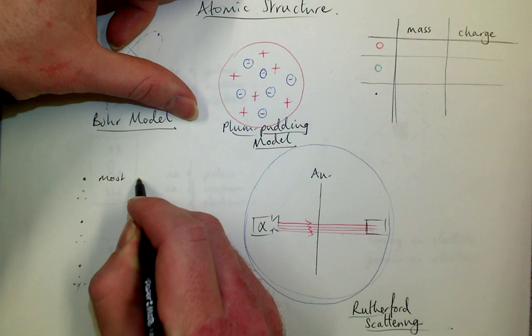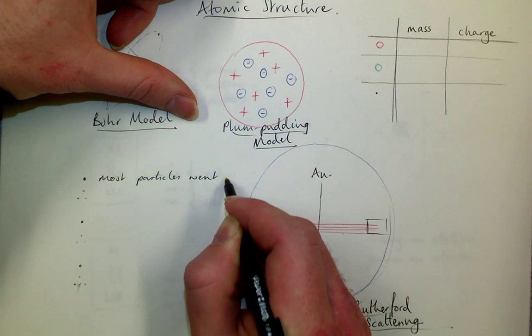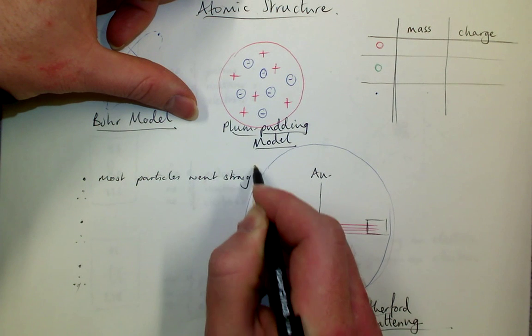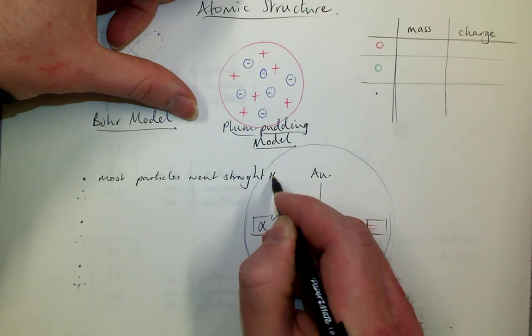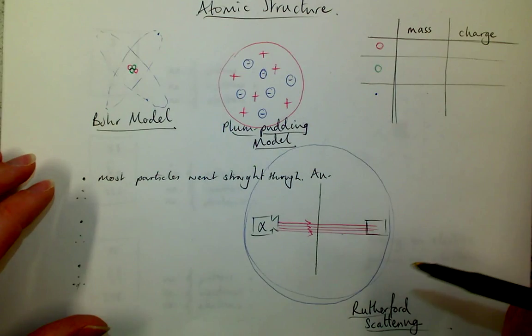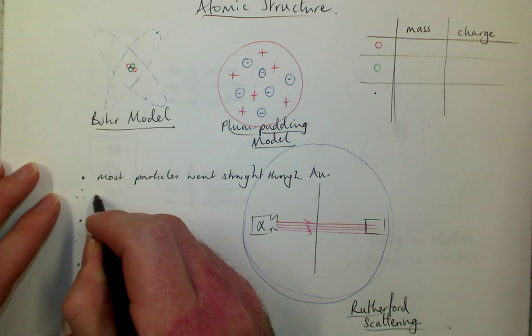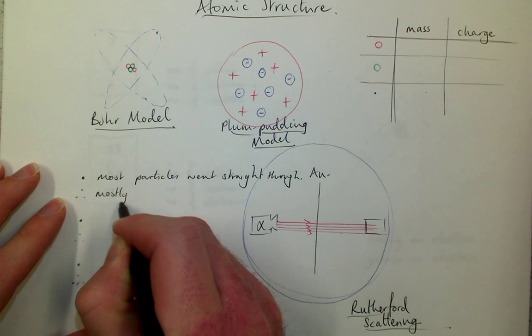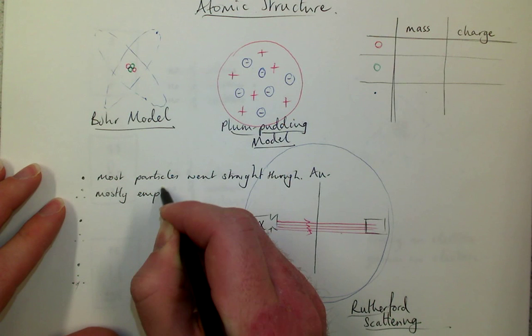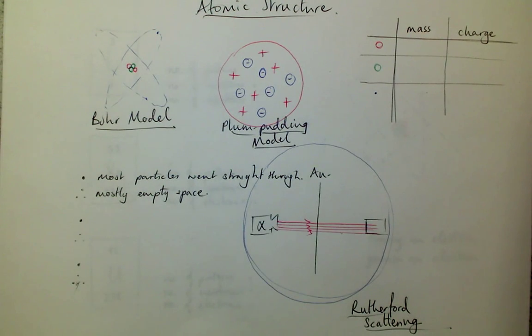So most particles went straight through. And his conclusion was that the atoms that he was firing at in the gold were actually mostly empty space. So the atoms were actually mostly nothing at all. And this amazed him.